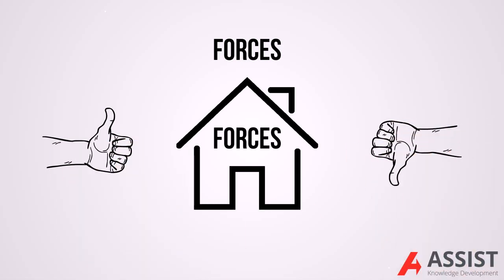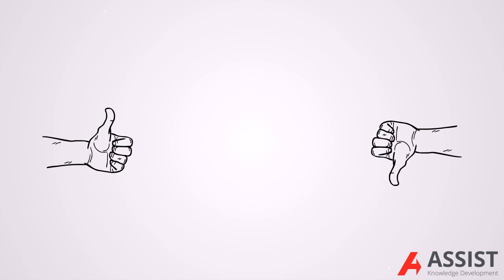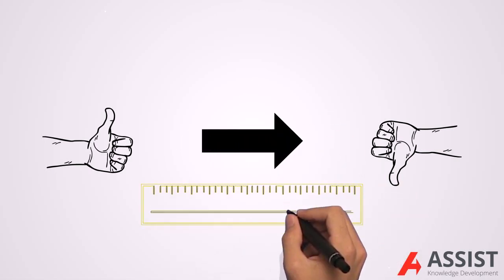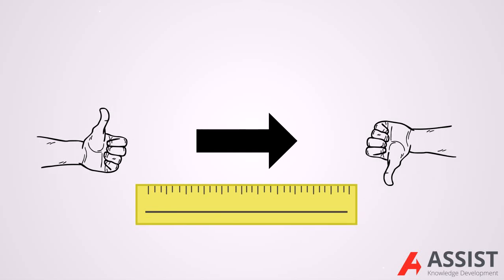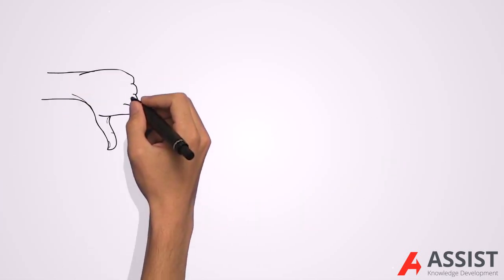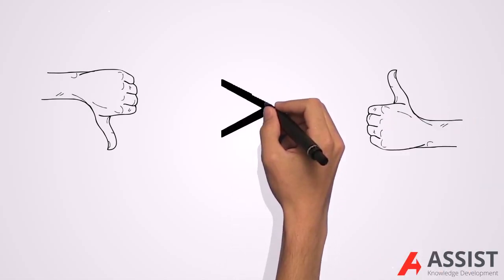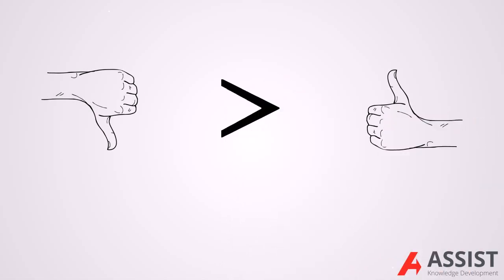These forces are represented as arrows in a force field analysis diagram, with the length of the arrow demonstrating the power of the force. If the negative forces are collectively more powerful than the positive forces, adoption of the proposal will be very difficult.